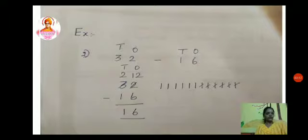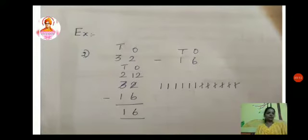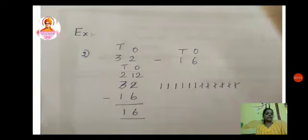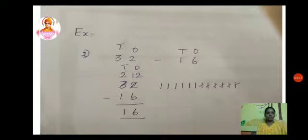We should get a borrow from the next number. The next number is 3, so I am going to get 1 from 3. If I get 1 from 3, the 2 becomes 12 — that 1 should not be added with the 2; it goes to the left of 2 making it 12. So 2 becomes 12. From 12 I subtract 6, which gives 6. And 3 became 2 now, so 2 minus 1 is 1. So the second number should be subtracted from the first number — not the first from the second — even if the first number is much smaller.